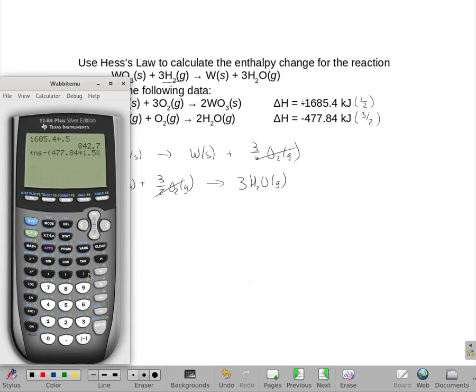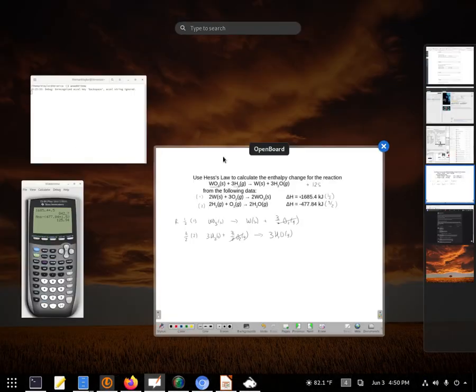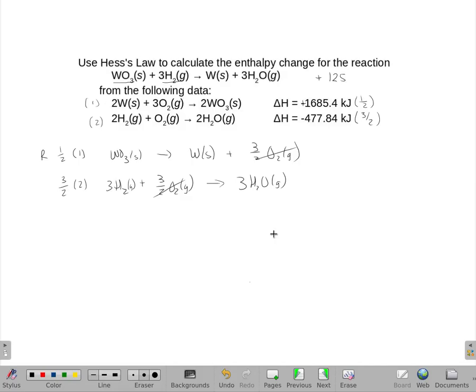And I get an answer of positive 125, and I think it was 0.94, but I'd only have nine because that's the significant digit, and it would be kilojoules. So positive 125.9 kilojoules.